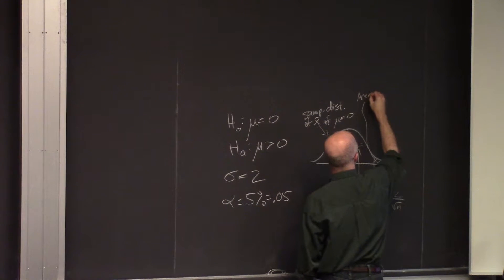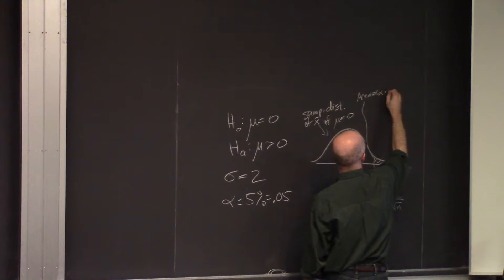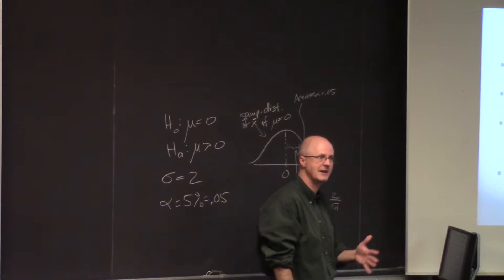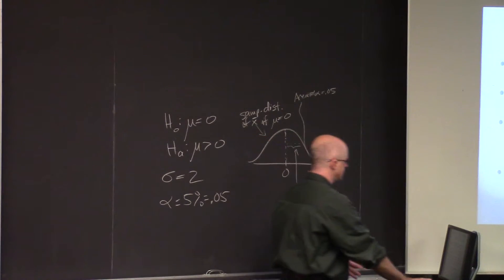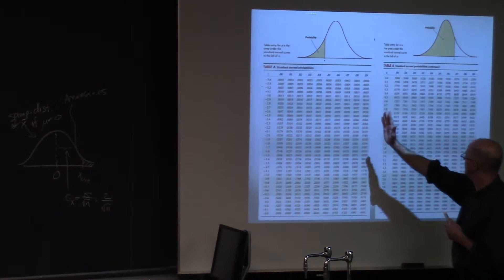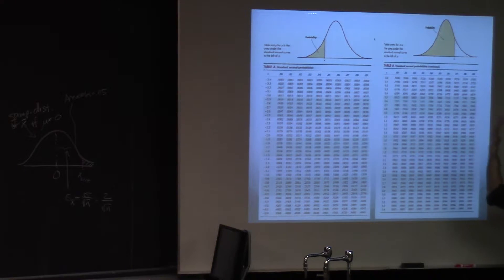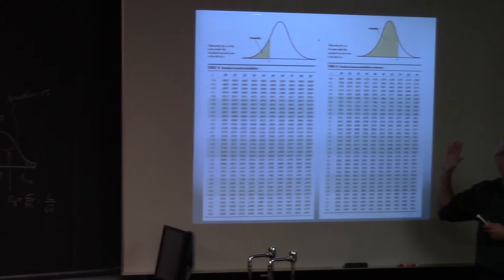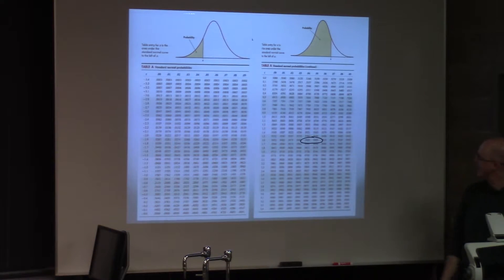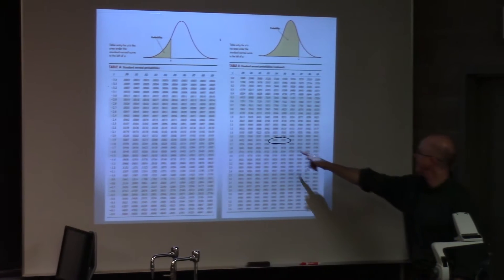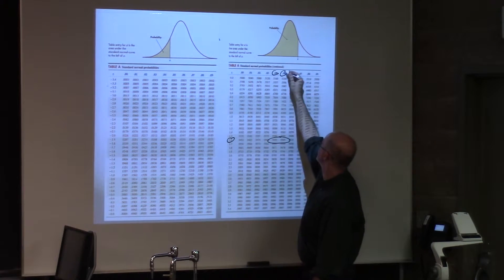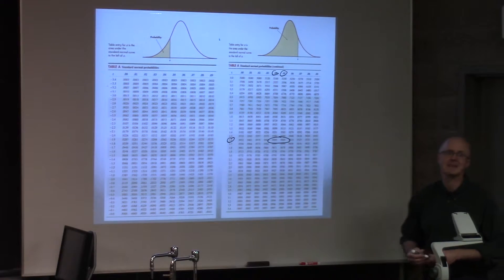There's some critical value x-crit for this right-tailed test that's the boundary of the rejection region. If the sample mean is to the right of x-crit, you reject the null. Since alpha is 0.05, the critical value is chosen so this area equals 0.05. The z critical value for a right-tailed test when alpha is 0.05 is 1.645 — confirmed by the table: 0.9495 and 0.9505 are equally close to 0.95, corresponding to 1.64 and 1.65, averaged to get 1.645.